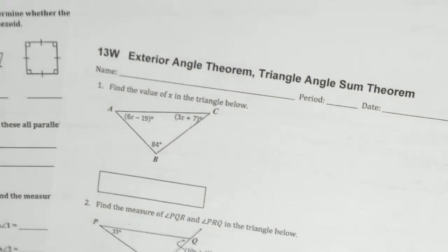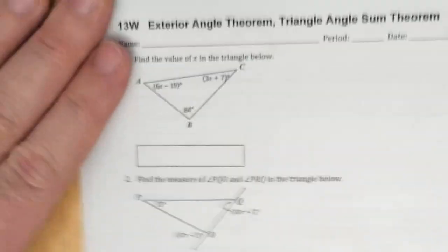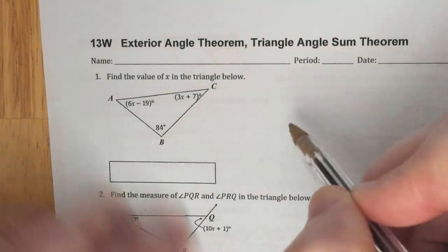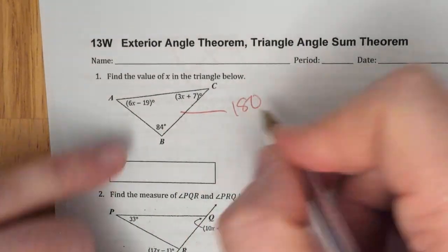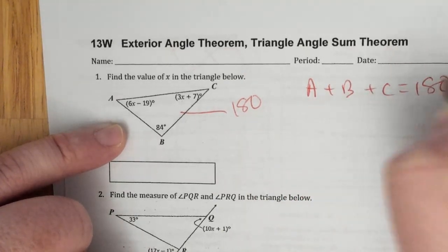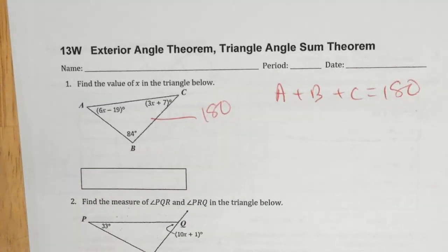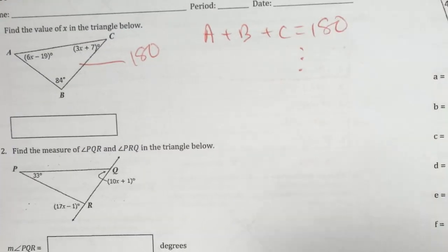We are on page 13. For number 1, all three angles of a triangle add up to 180 degrees. So angle A plus angle B plus angle C equals 180 degrees, and you just solve for x.